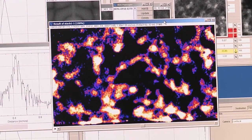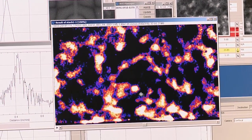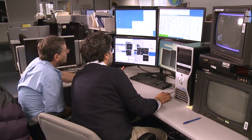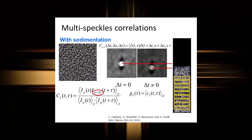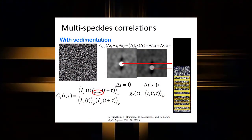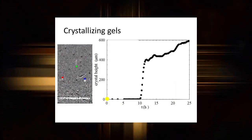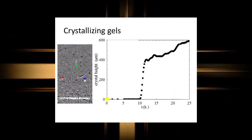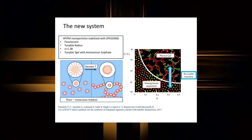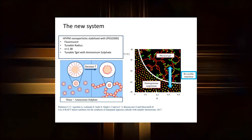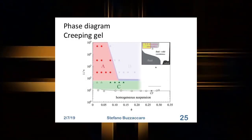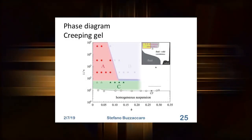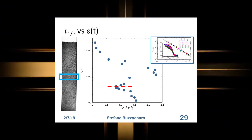Our colloidal system is made by very small spherical particles in which the aggregation is promoted by increasing the temperature, because essentially the particles are covered by a polymer chain, and when you increase the temperature we reduce the solubility of the polymer with the solvent, and this promotes the aggregation of the particle. One of the advantages of this method is if you reduce again the temperature the system completely remelts, so you can repeat the experiment.